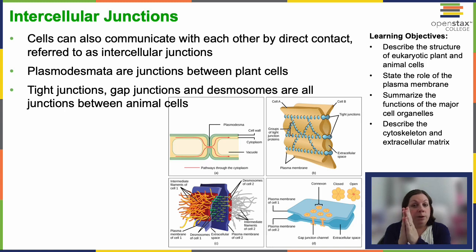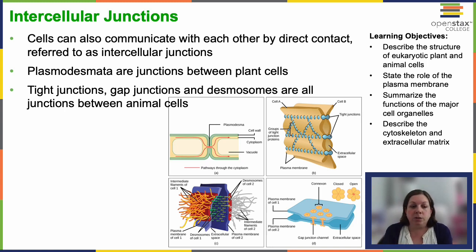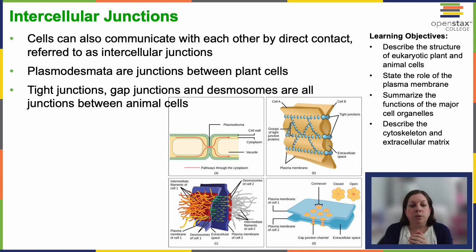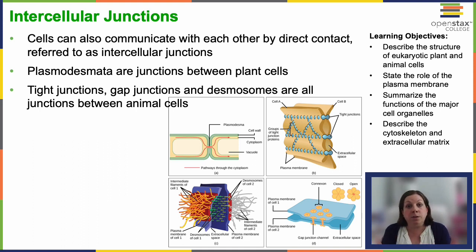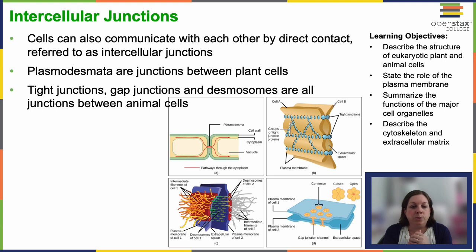Cells can also communicate with each other via direct contact, where the membrane of one cell is in tight contact with the membrane of another cell. They're connected by intracellular junctions. The extracellular matrix sends signals out, and there's also a whole array of signaling proteins on the surface of the cell membrane that can interact with neurotransmitters, second messengers, and similar molecules.